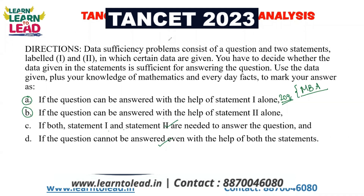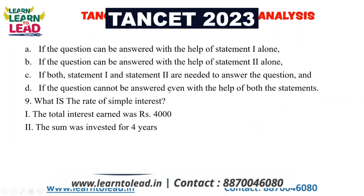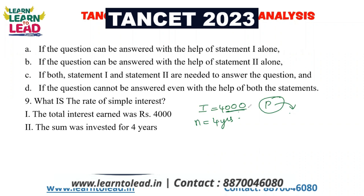Now let us see the first question without wasting time. What is the rate of simple interest? The total interest on 4000 is given, and the time n is equal to 4 years. But if interest is 4000 and n equals 4 years, you are going to find the principal. The principle is how much you invest. That's why there is a percentage of 4000 and you divide by the rate of interest over 4 years. You are not getting the principal or the rate from one statement alone. If you combine both, you can answer the question. So the answer here is option D.